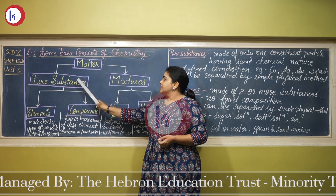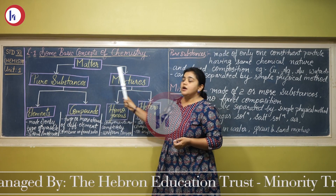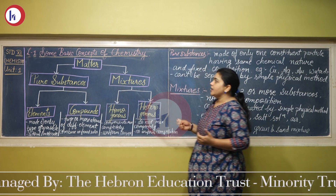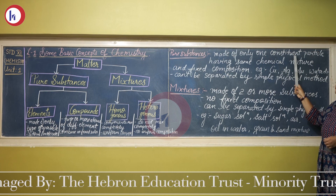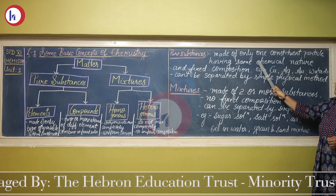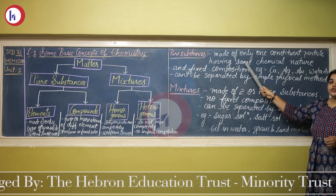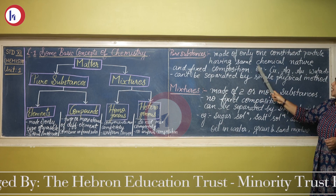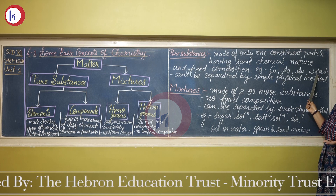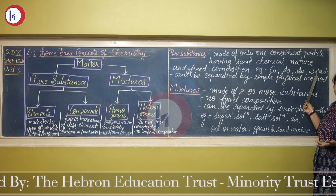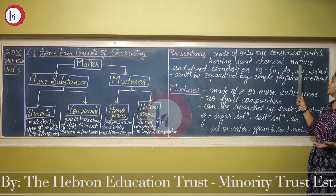Matter can also be classified on the basis of its chemical properties into two parts: pure substances and mixtures. Pure substances are made of only one type of constituent particle having the same chemical nature, and their composition is fixed. Examples include copper, gold, silver, and water — H2O — where the ratio of hydrogen to oxygen is 2:1, giving it a fixed composition.